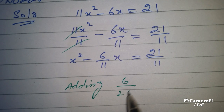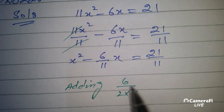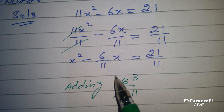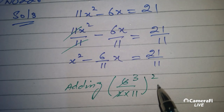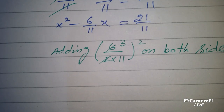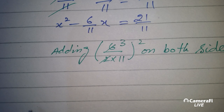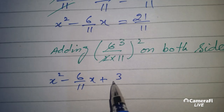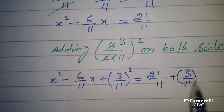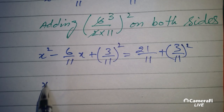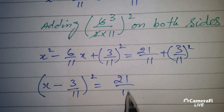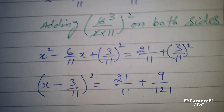Now we have to write the half square. Here we have to write: adding (6 over 2×11)² and the same half squared on both sides. Here we have to write minus 6 by 11 x plus 3, and here we have to write whole square.